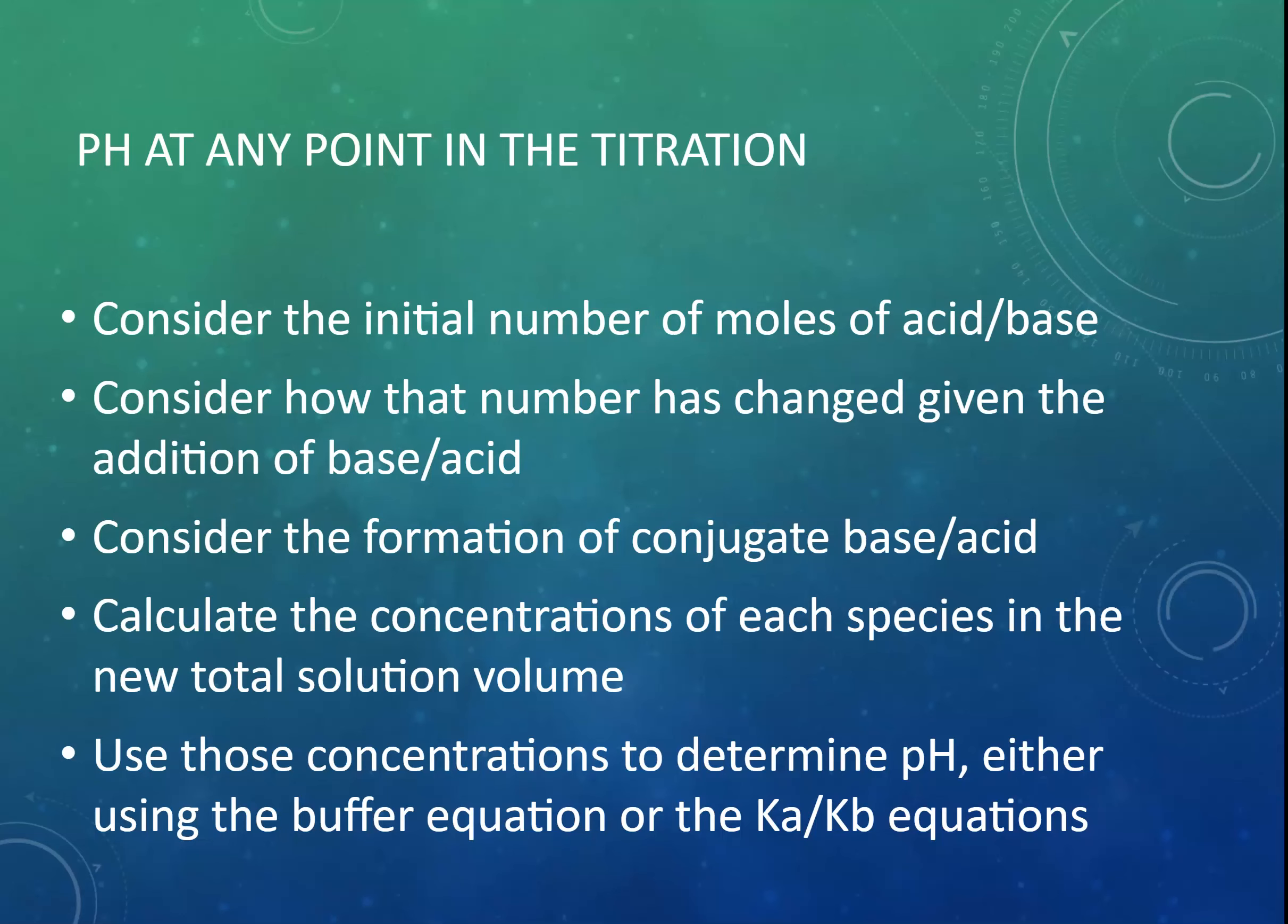What we have to do is think very carefully and clearly in our head: what did we start with? How many moles of acid or base did we start with? How many moles of acid or base have we added? Therefore, how many moles of our conjugate acid or base have been formed? Because the acid is converted into the conjugate base, or the base is converted into the conjugate acid. So we need to think about how many moles of that are present.